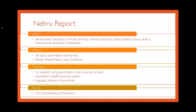The Nehru Report was created because the Secretary of State for India, Birkenhead, criticized that Indian leaders could not draft a unanimously accepted constitution. An all-party committee was formed with Pandit Motilal Nehru as chairman. The report proposed establishing self-government in India, implementing adult franchise (voting system), and linguistic division of provinces. By the end of 1929, an indication was given that if the Nehru report was not accepted by the government, the Civil Disobedience Movement would be started.